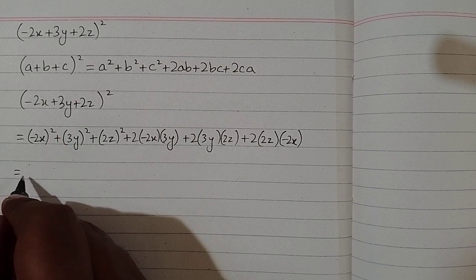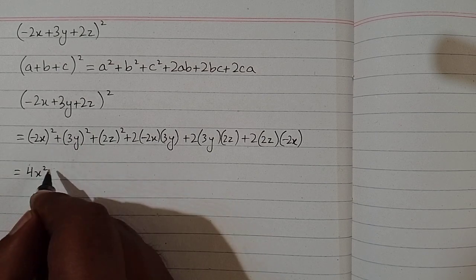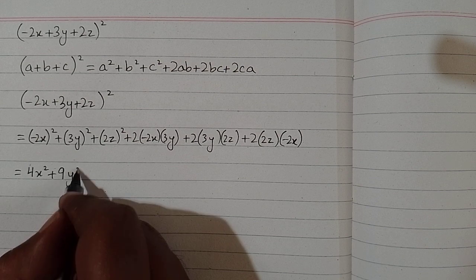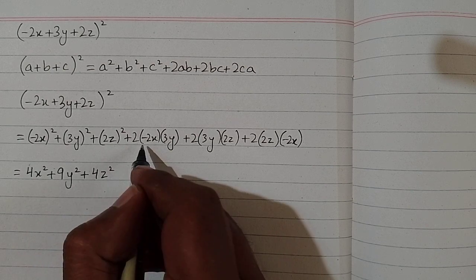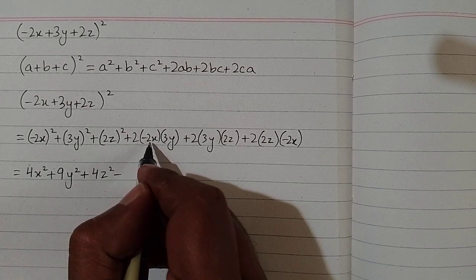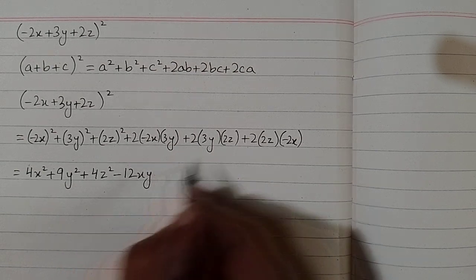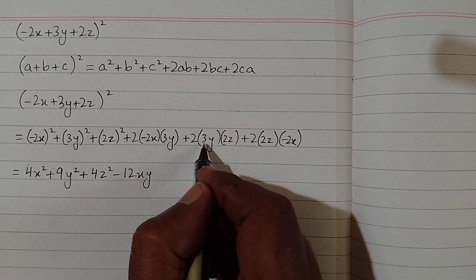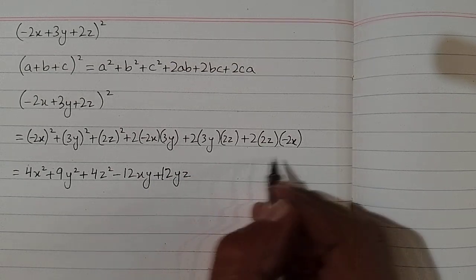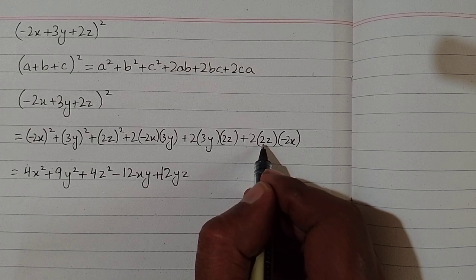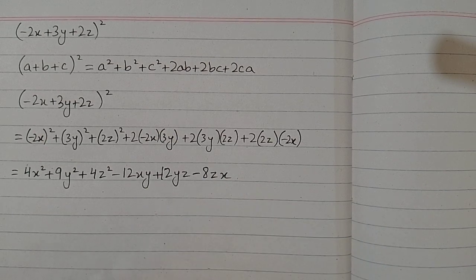Square of minus 2 is 4 and square of x is x square; square of 3 is 9 and square of y is y square; square of 2 is 4 and square of z is z square. For 2ab: 2 times minus 2 times 3 gives minus 12, so we have minus 12xy. For 2bc: 2 times 3 times 2 is 12, so we have 12yz. For 2ca: 2 times 2 times minus 2 is minus 8, so we have minus 8zx.